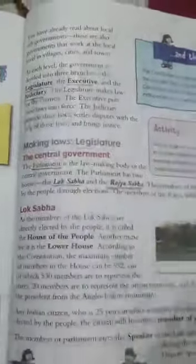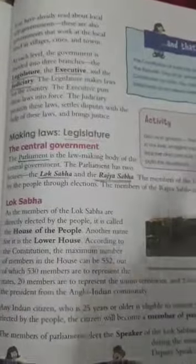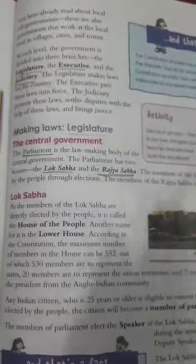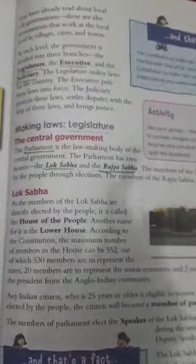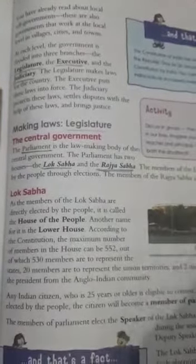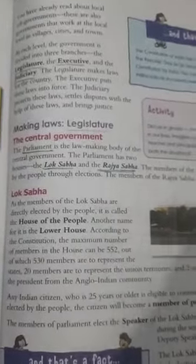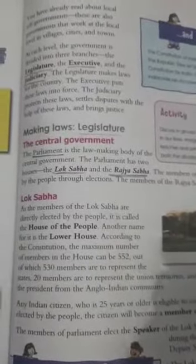The government is divided into three branches: legislature, executive, and judiciary. The legislature makes laws for the country. The executive puts the laws into force. The judiciary protects those laws and settles disputes.